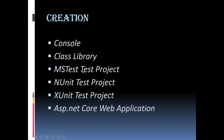Different testing frameworks supported by ASP.NET Core for automatic unit testing are MS Test Test Project, NUnit Test Project, and XUnit Test Project. With these, you can define and run unit tests to maintain code health, ensure code coverage, and find errors and faults before your customers do.